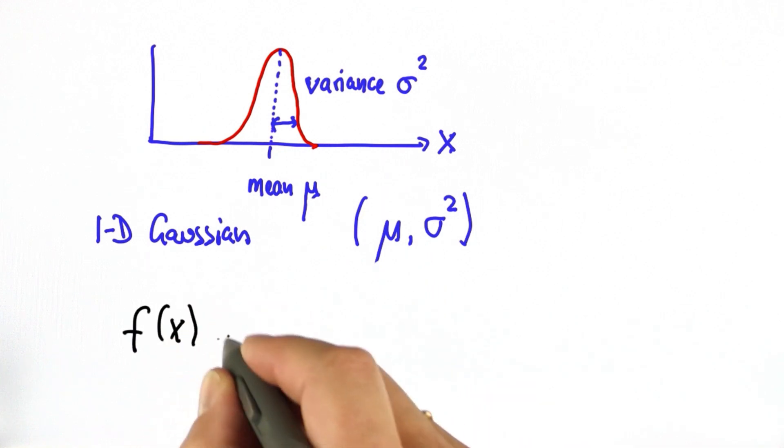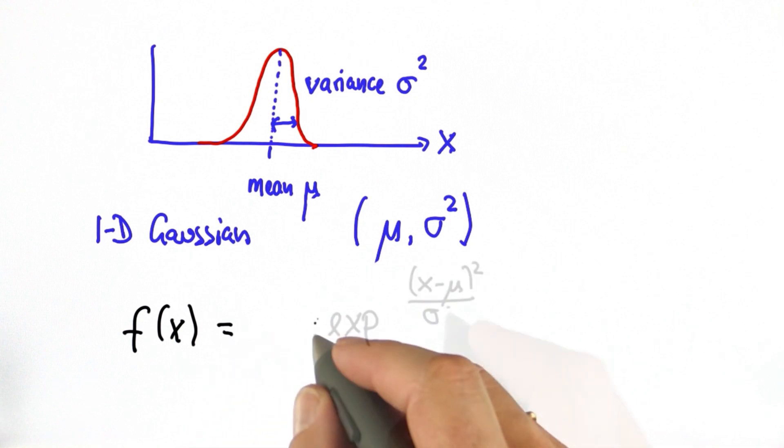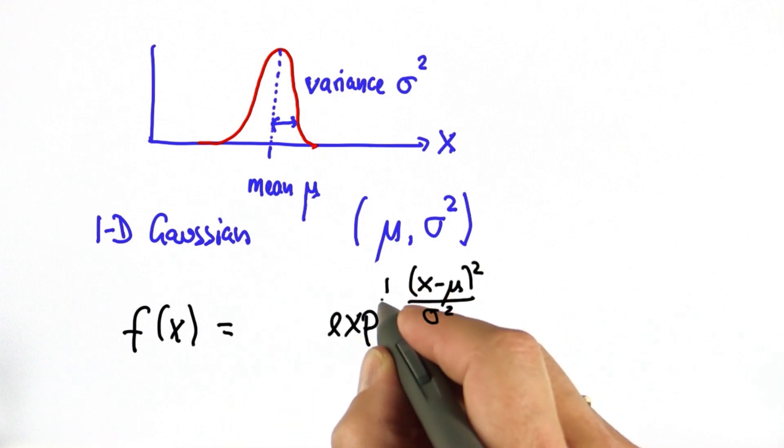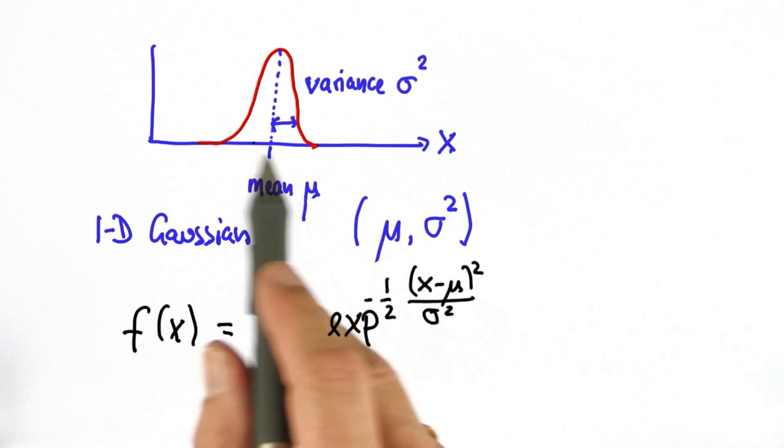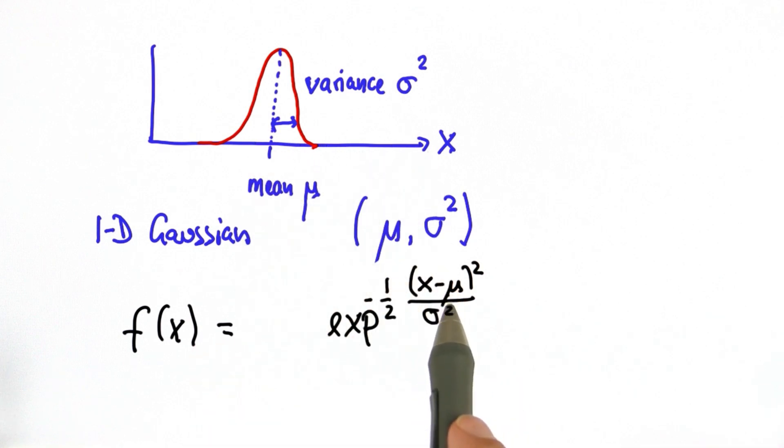The exact formula is an exponential of a quadratic function where we take the exponent of this complicated expression over here, the quadratic difference of our query point x relative to the mean mu, divided by sigma squared, multiplied by minus a half.